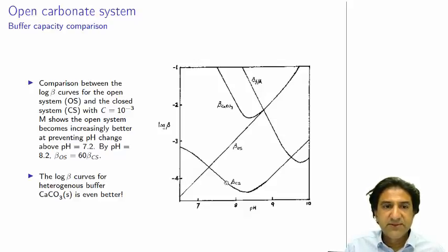Let's look at the buffer capacity comparisons with different quantities. Here are the log beta curves for the open system. Here's the open system beta capacity between pH 6.5 and 10.